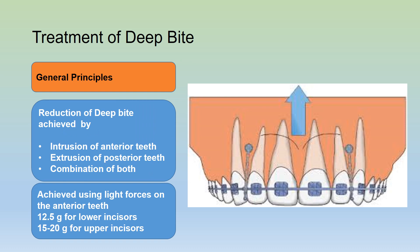How do we treat deep bite? In general, reduction of a deep bite is achieved by intrusion of the anterior teeth, extrusion of the posterior teeth, or a combination of both. Intrusion is achieved using very light forces — around 12.5 grams for the lower incisors and about 15 to 20 grams for the upper incisors. Extrusion of posterior teeth will require heavier forces.